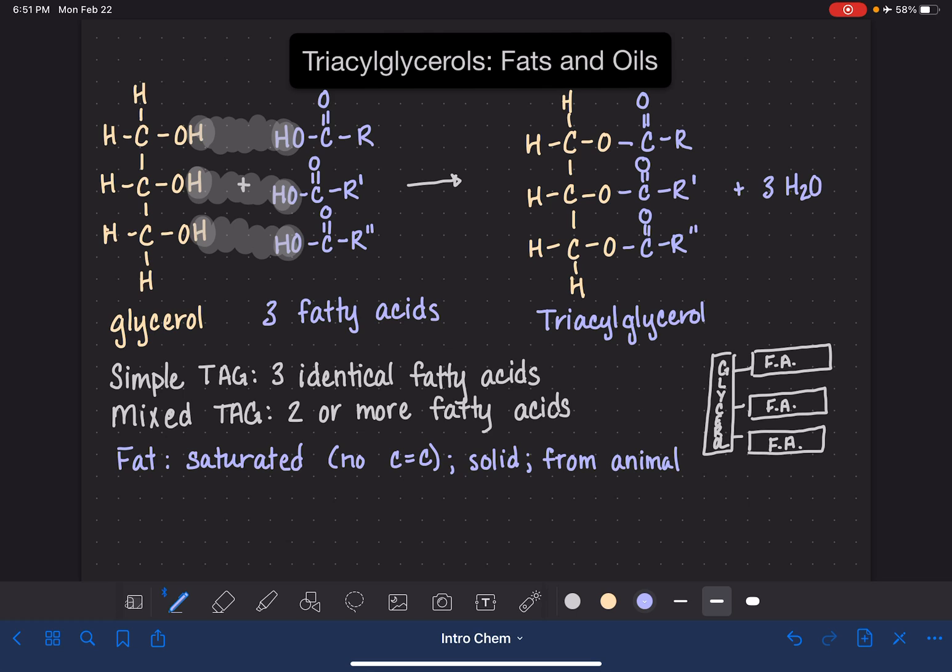But there are exceptions to this rule. An oil is typically polyunsaturated, meaning that it has a lot of double bonds, many carbon-carbon double bonds in the fatty acid tail. They are typically liquid at room temperature, and they are typically from plant sources.